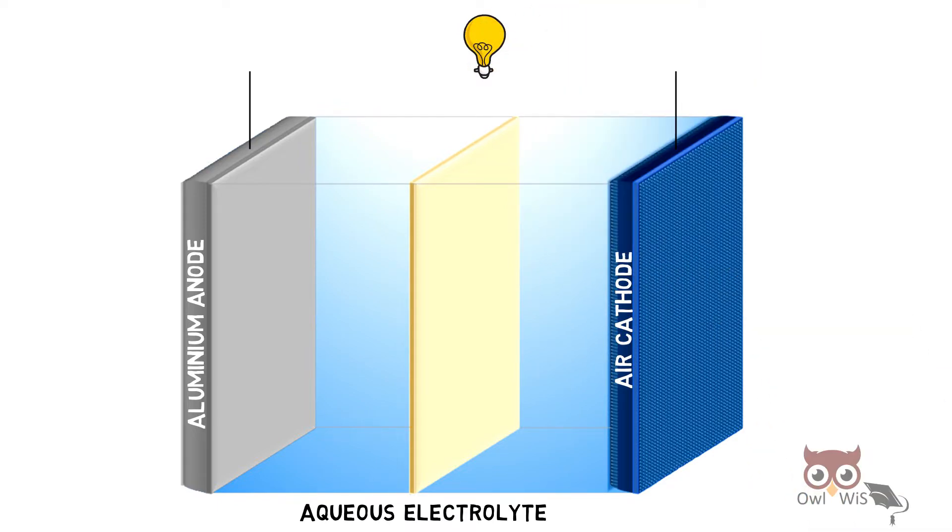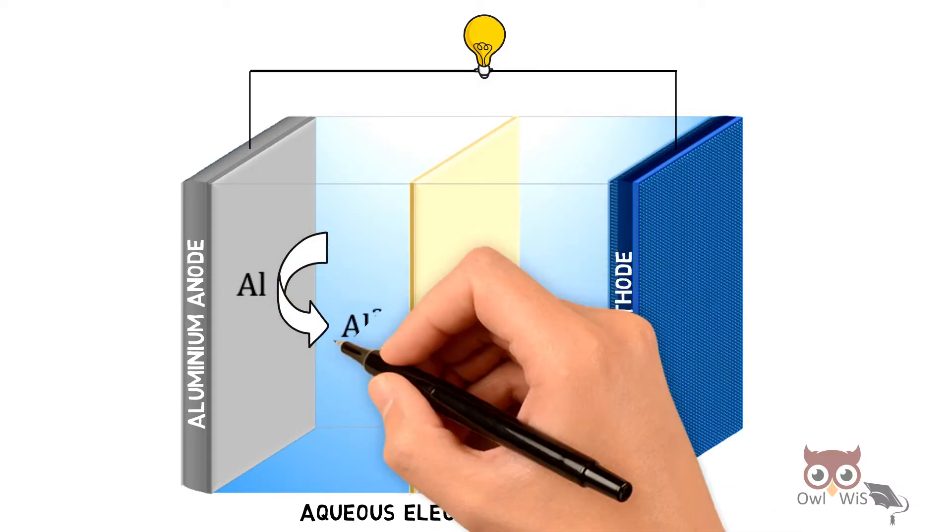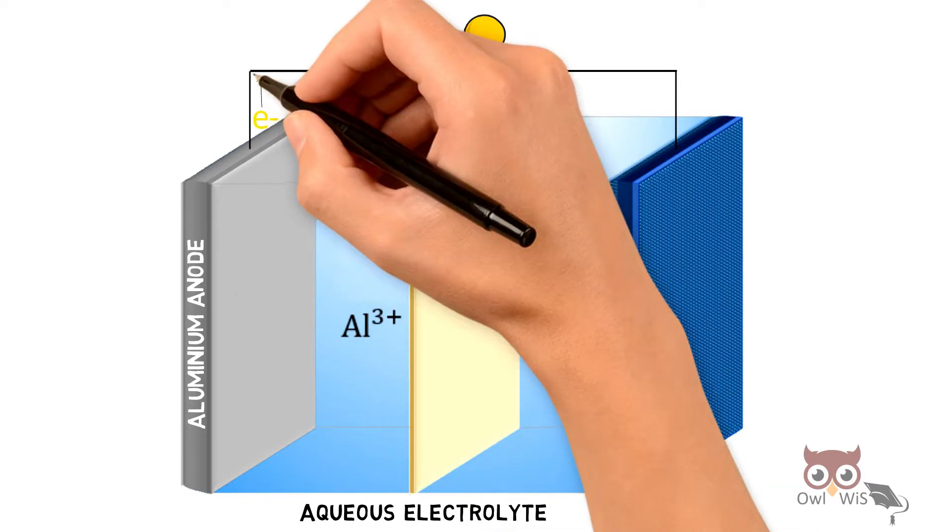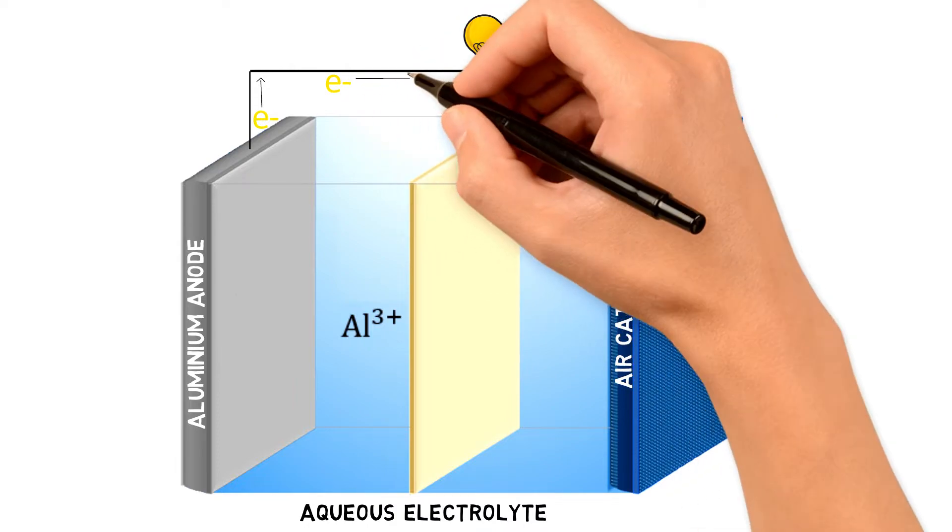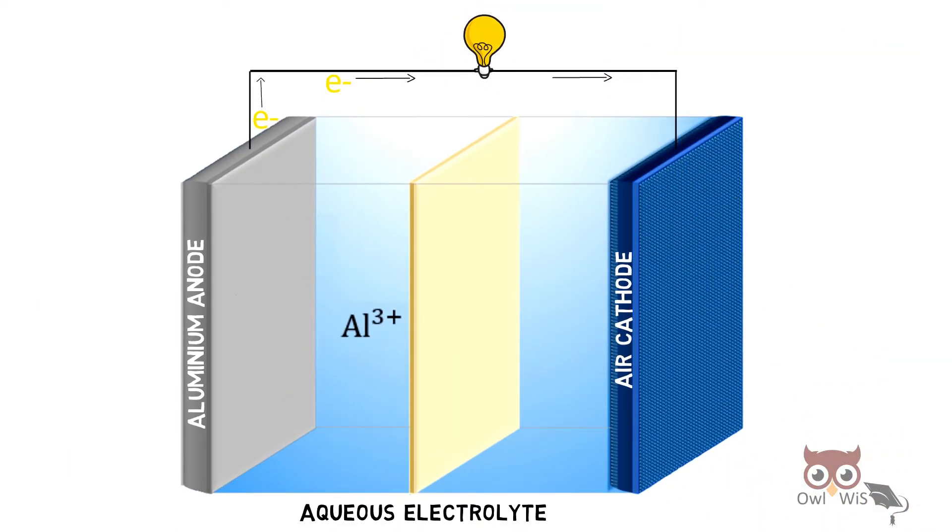Consider a load is connected across the electrodes. Aluminium is released as Aluminium ions and electrons are produced. These electrons flow through the external circuit, light up the load, and reach the cathode.